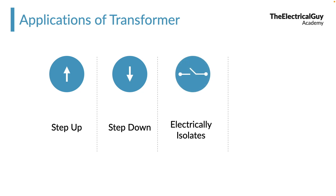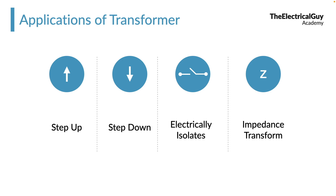Another application is that a transformer can isolate the circuit electrically. A transformer has two windings: the primary winding to which we give the supply, and the secondary winding through which we take the output. Between these two windings there is no physical connection, yet we can get voltage output at the secondary — how that is possible you will learn throughout the course. Additionally, a transformer can also transform impedances, resistors, and capacitors — all of that is explained in this course.